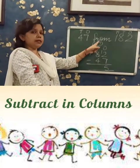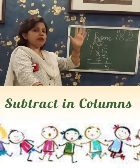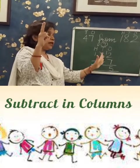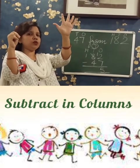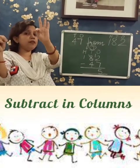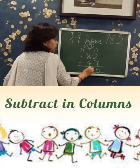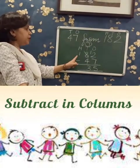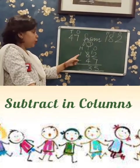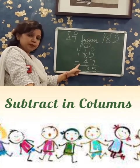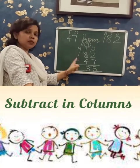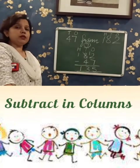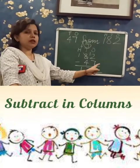10's place it is 7. Take out 7 fingers, from that take away 4: 1, 2, 3, 4. What is left? 3. So 3 in the place of 10's. 100's place it is 1, there is no other number to subtract, so 1 minus no number is 1. The difference is 135.